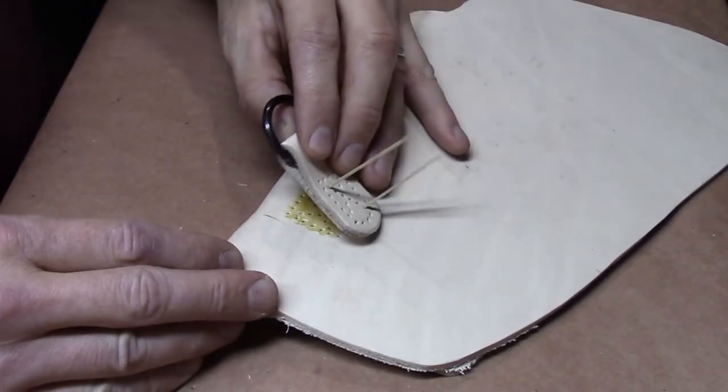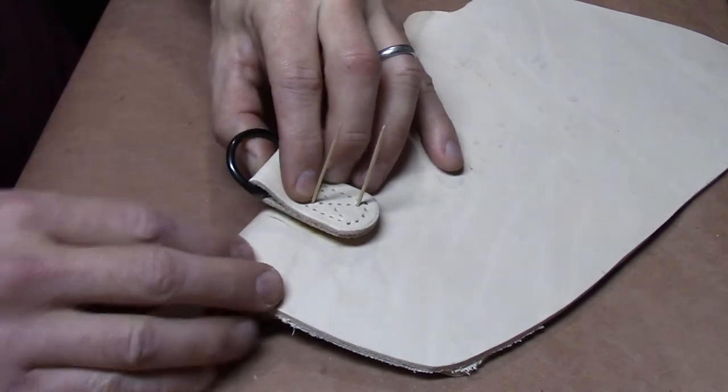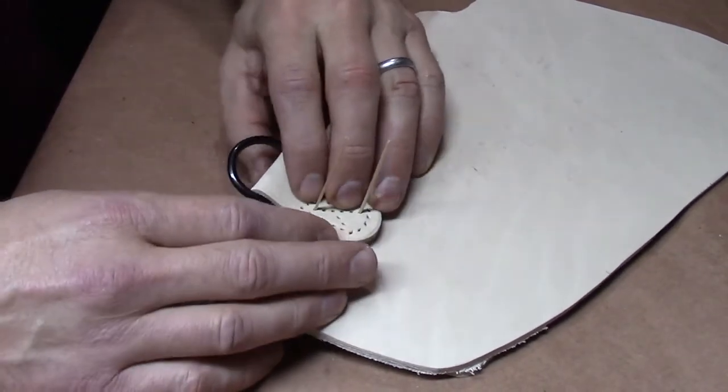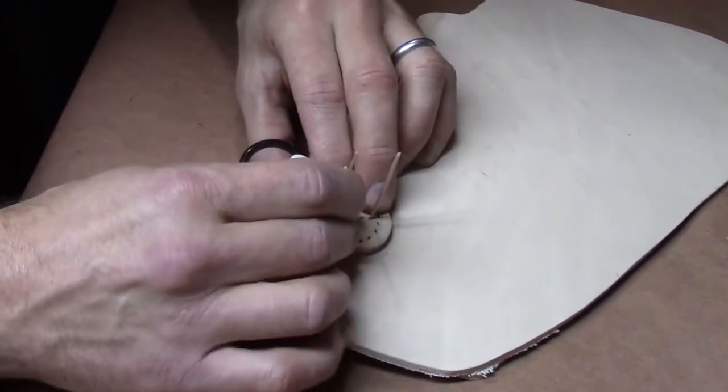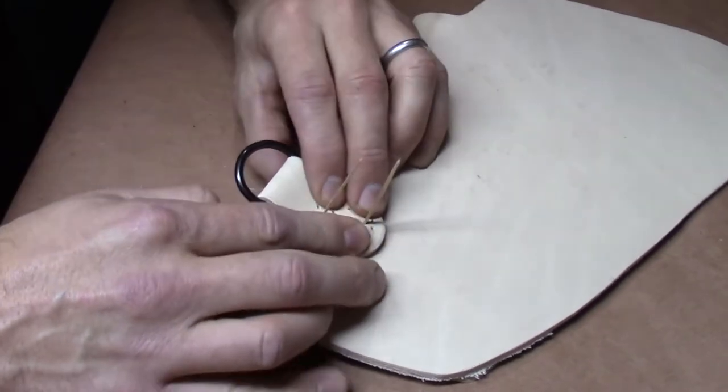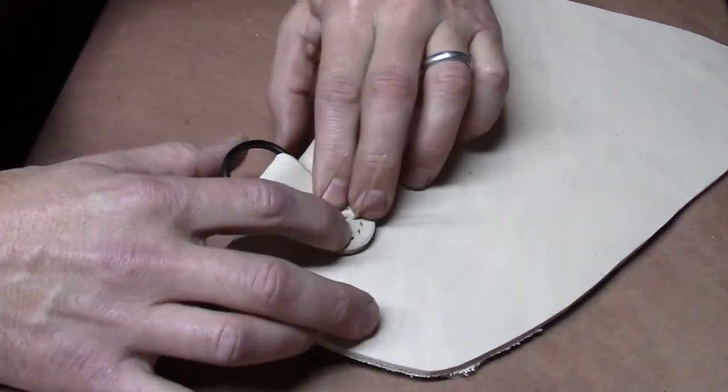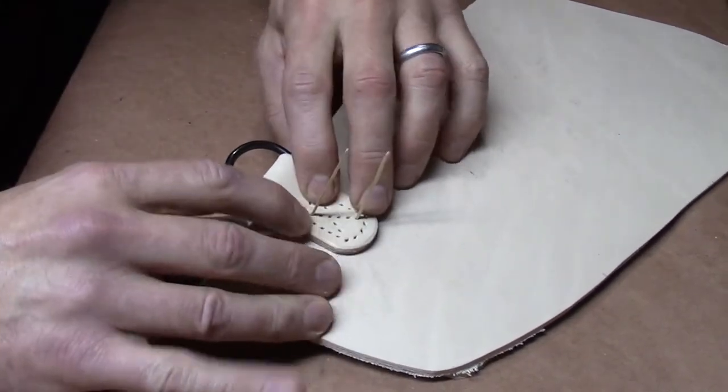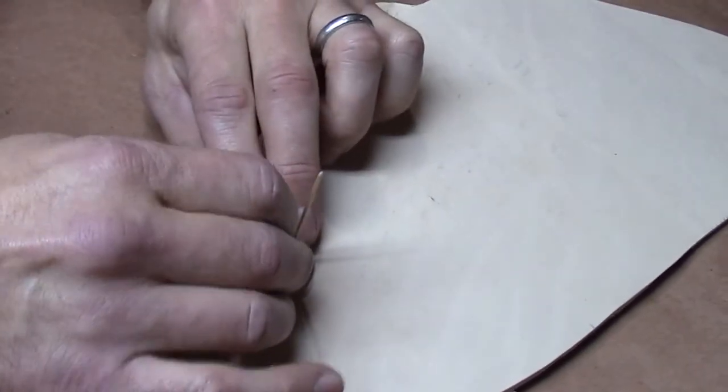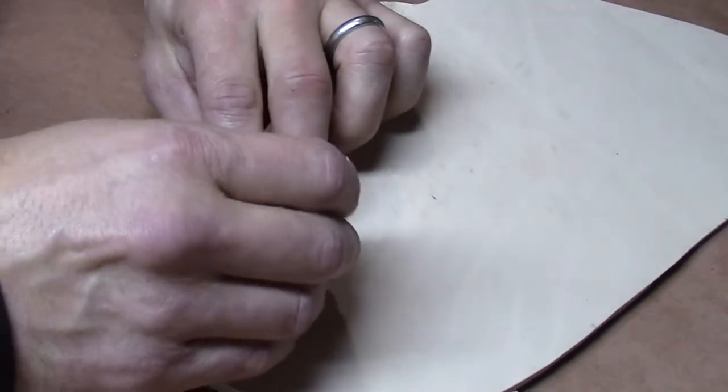Contact cement in place. I line up my corresponding holes that I have my toothpicks running through. And perfect. Just like that, I know that all of my holes have now lined up and I won't have any problem hand stitching that at a later time.